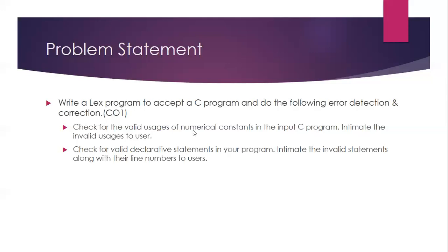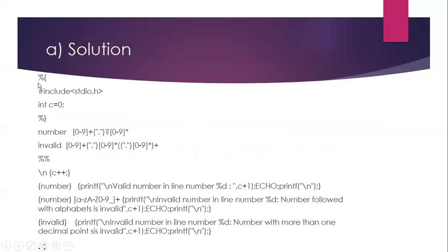Let us see the solution for part A. In the definition part of the lex program, include the required header file and initialize the counter. Then we write the regular definition. First, we give 'number' followed by the regular expression to recognize a number. The regular expression for number is written as: one or more digits, followed by an optional dot, followed by zero or more digits from 0 to 9. Using this regular expression we can recognize both integer and floating point numbers.